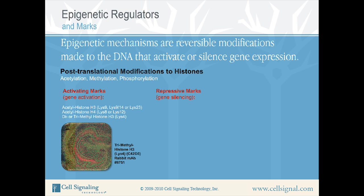In this figure, IF analysis shows expression of the activating mark trimethyl-histone H3 lysine 4 in mouse embryo. Trimethyl-histone H3 lysine 4 antibody has been labeled green. Actin filaments have been labeled red with DY554 phalloidin. There are high levels of trimethyl-histone H3 lysine 4 expression in this mouse embryo because transcriptional activation of embryo-specific genes is occurring.